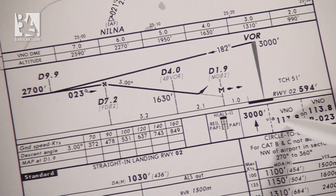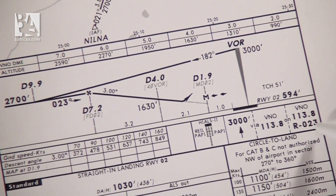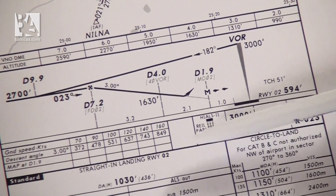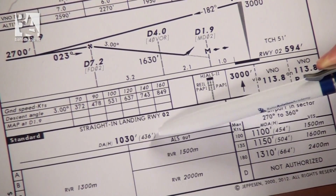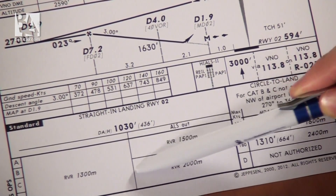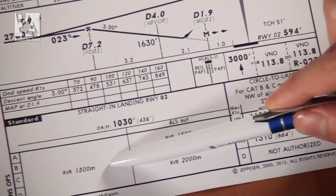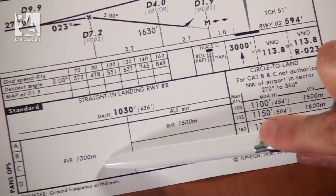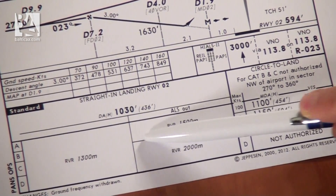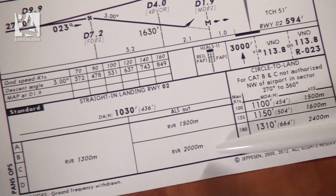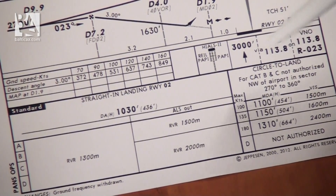Feet via Victor November Oscar on 023. And below that again minimums — minimums in the vertical sense: decision altitude one thousand three hundred. If the approach, we would have an RVR of two thousand meters for category A and C. And again minimums for circle to land.